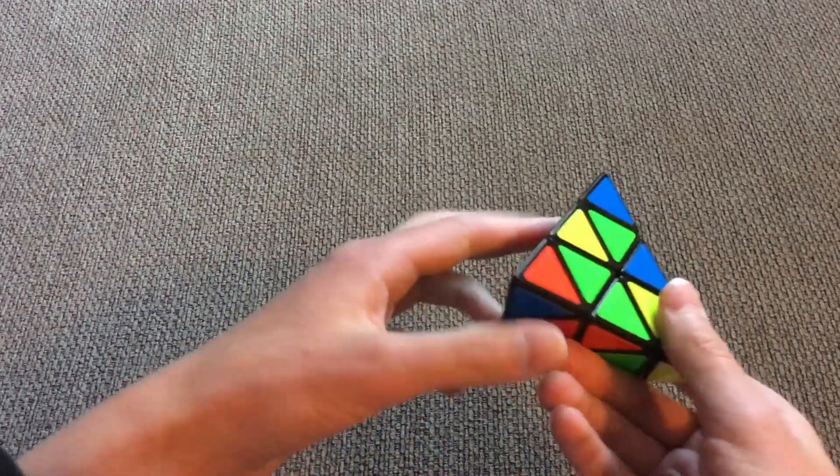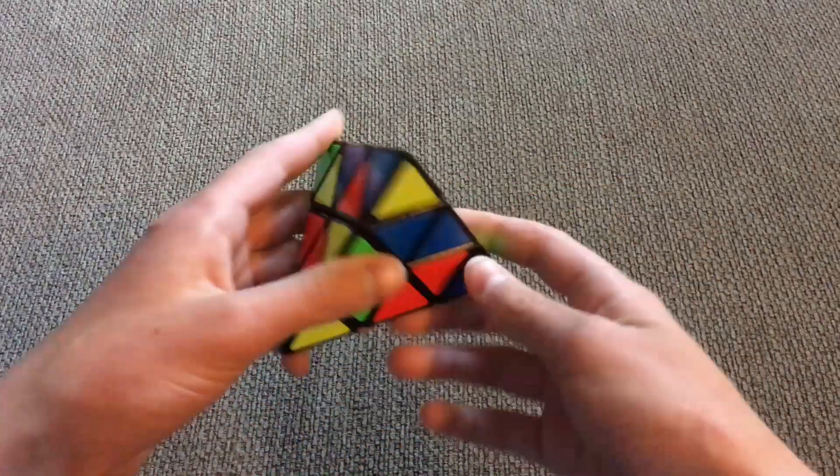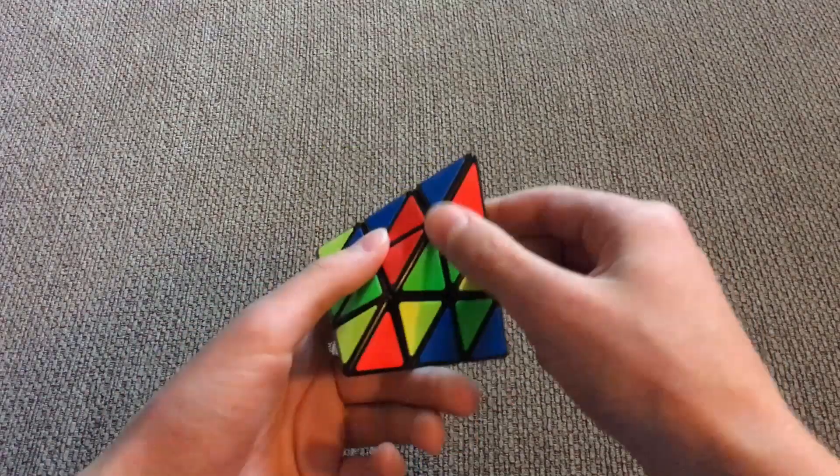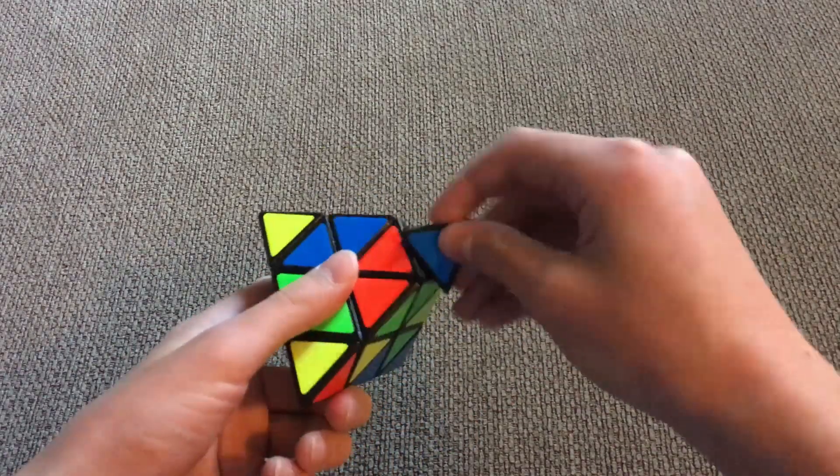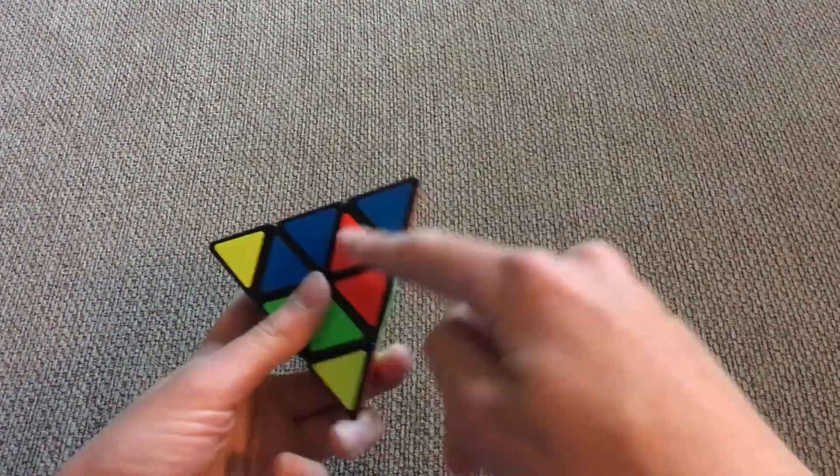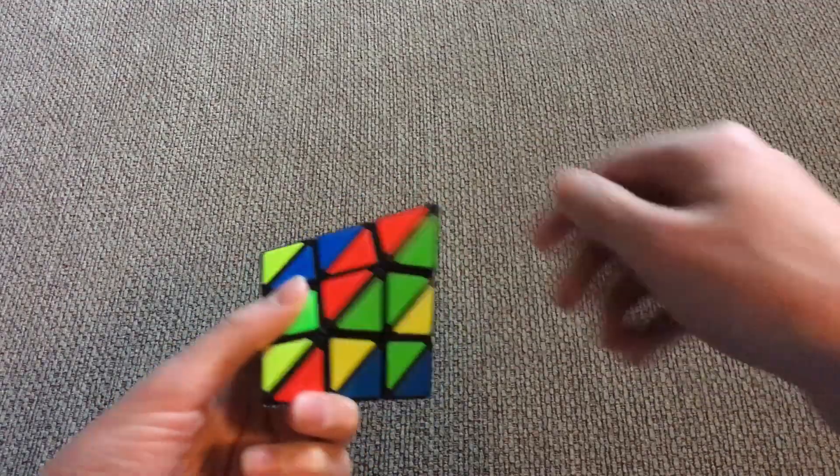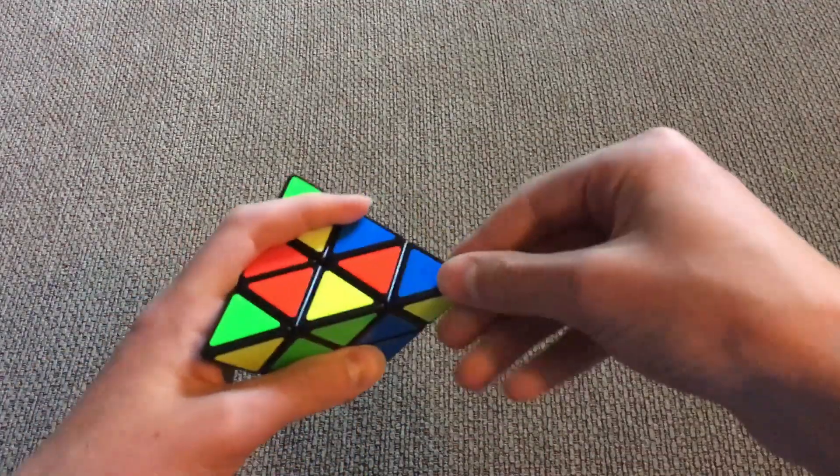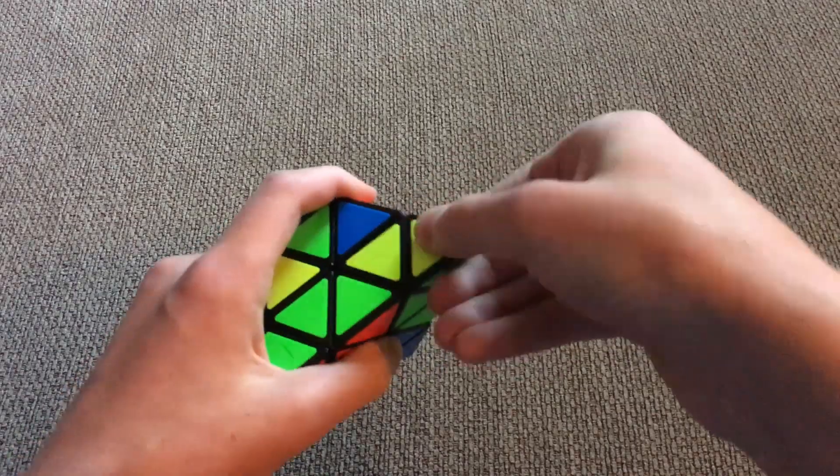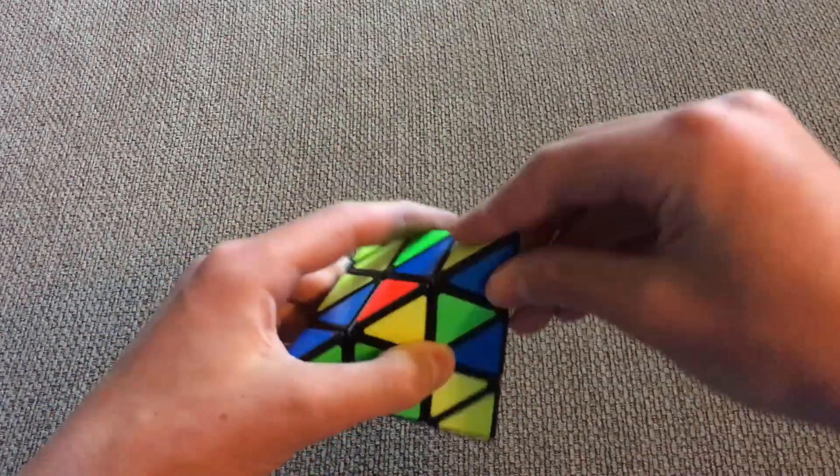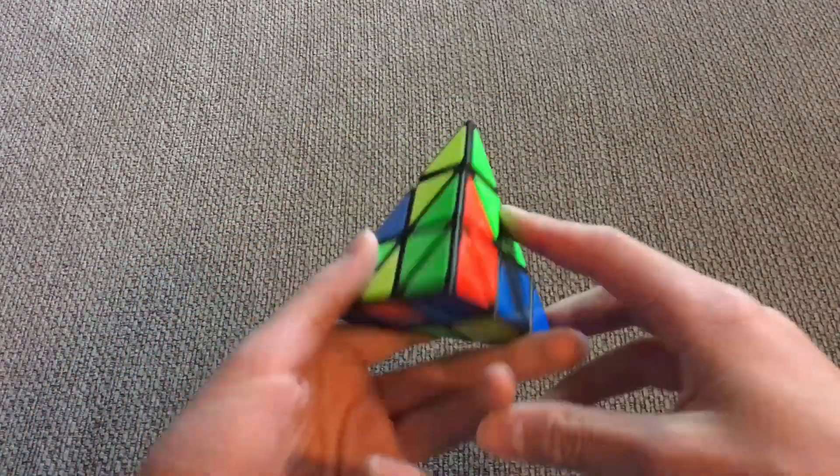So now, once you have a scrambled Pyraminx, the first step you need to do is align the tip parts, which are these ones, with the colors they are. So you just align them so they're like that. Each one has a correct alignment. And they're always going to match up like that.